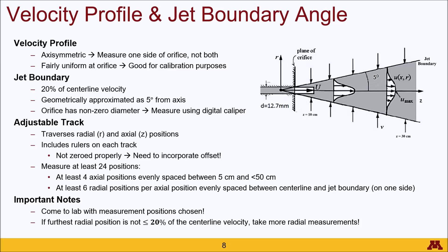The adjustable track allows you to traverse both radial and axial positions, and on each track there is a ruler to keep track of your measurement position. However, each ruler is not zeroed properly. The zero point on the z-axis will be set at a distance away from the orifice, and the radial position corresponds very poorly to the ruler on the radial axis. You might find that the axis point is at something like 70 millimeters instead of zero, so you need to incorporate those offsets.